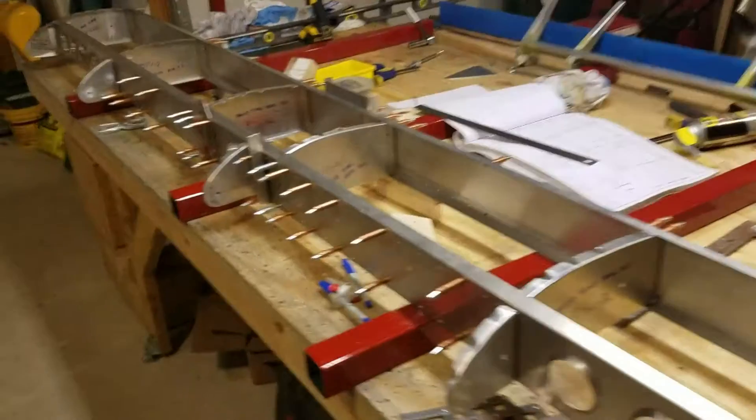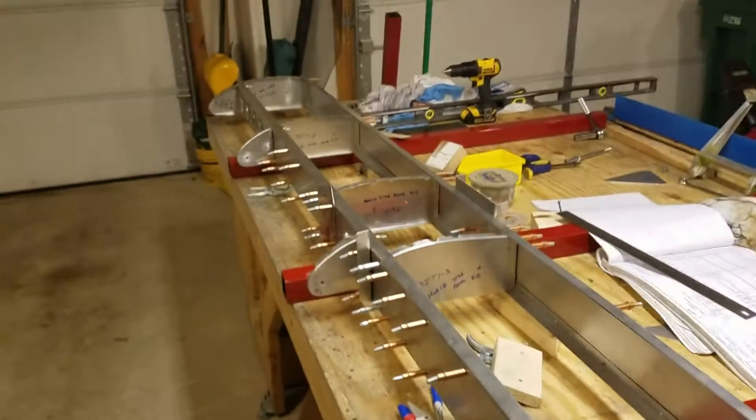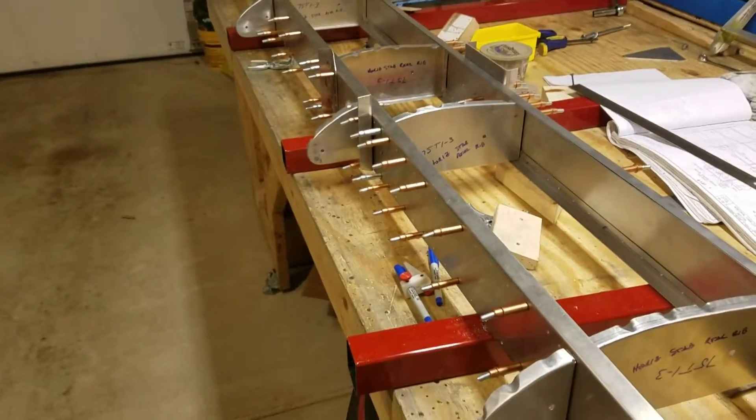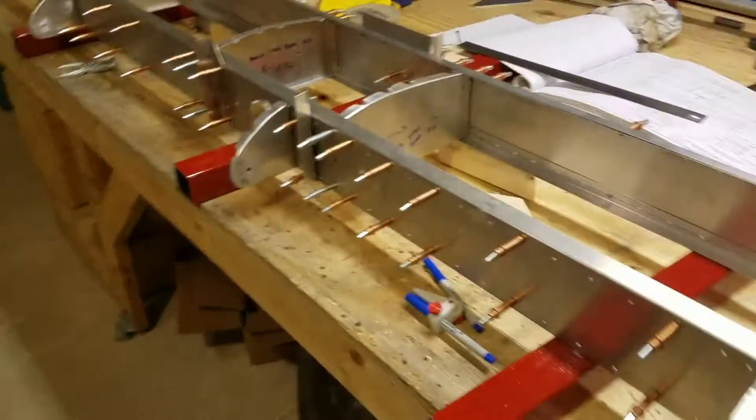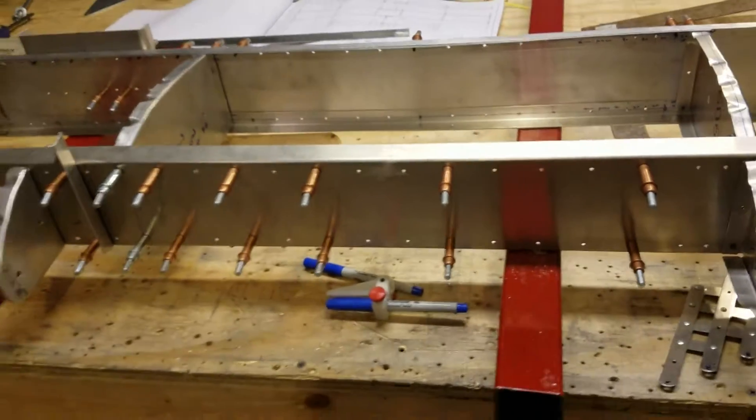All right folks, here's pretty much the final assembly on the horizontal stabilizer. I've got the nose ribs attached and you can see I've used some square tubing down here.